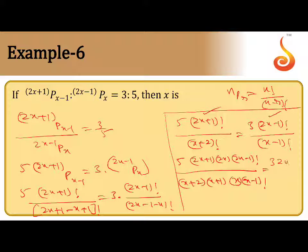So now 3 into 2x minus 1 factorial by x minus 1 factorial. The x minus 1 factorial cancels, 2x minus 1 factorial cancels. What is left out? One more x also cancels. So 2 is left out. 2 into 5, so 10 into 2x plus 1 by x plus 2 into x plus 1 equals 3.